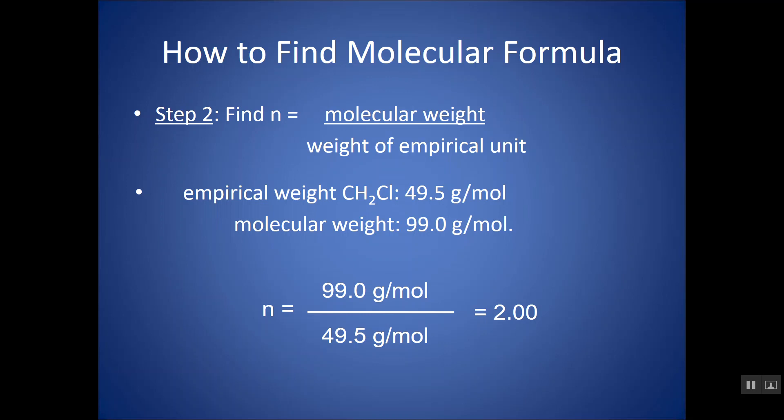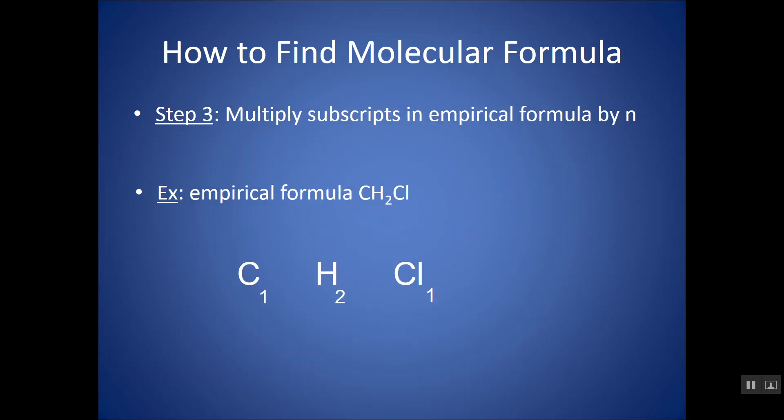So all I have to do is go back to my empirical formula, C1H2Cl1, and multiply each of those subscripts by the integer I found. Multiply each by two, and I get C2H4Cl2. Very simple.